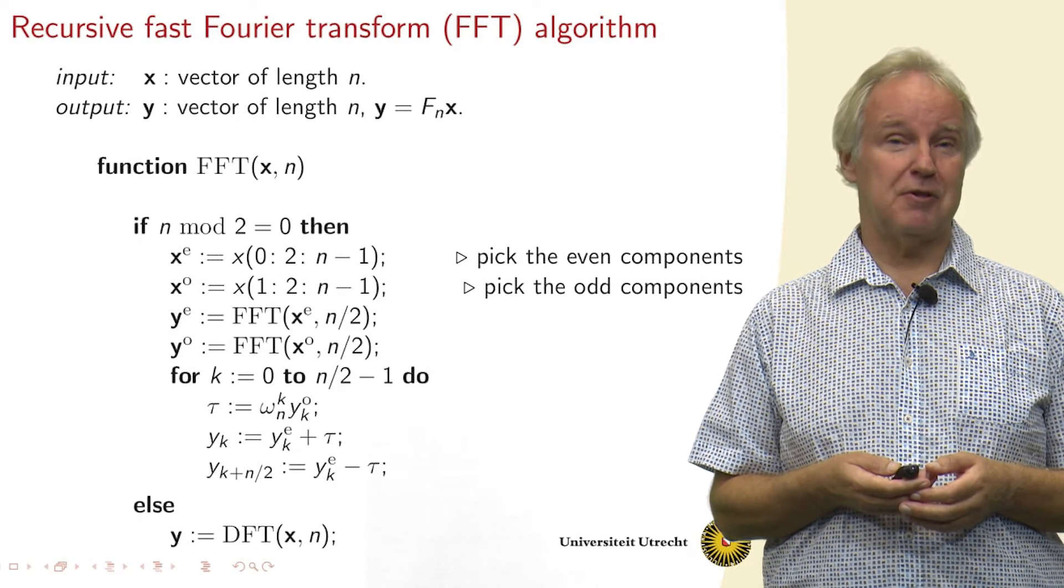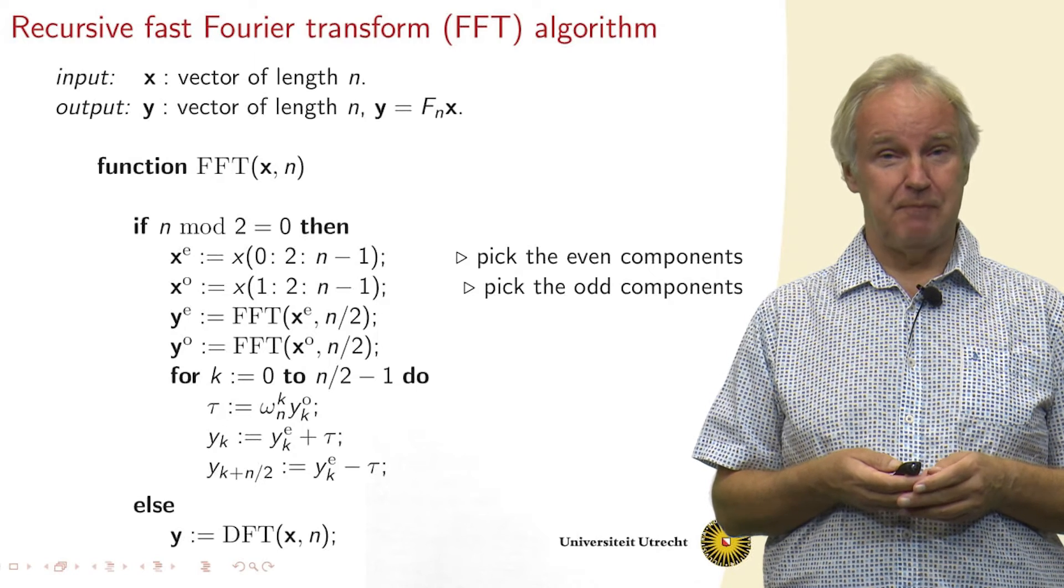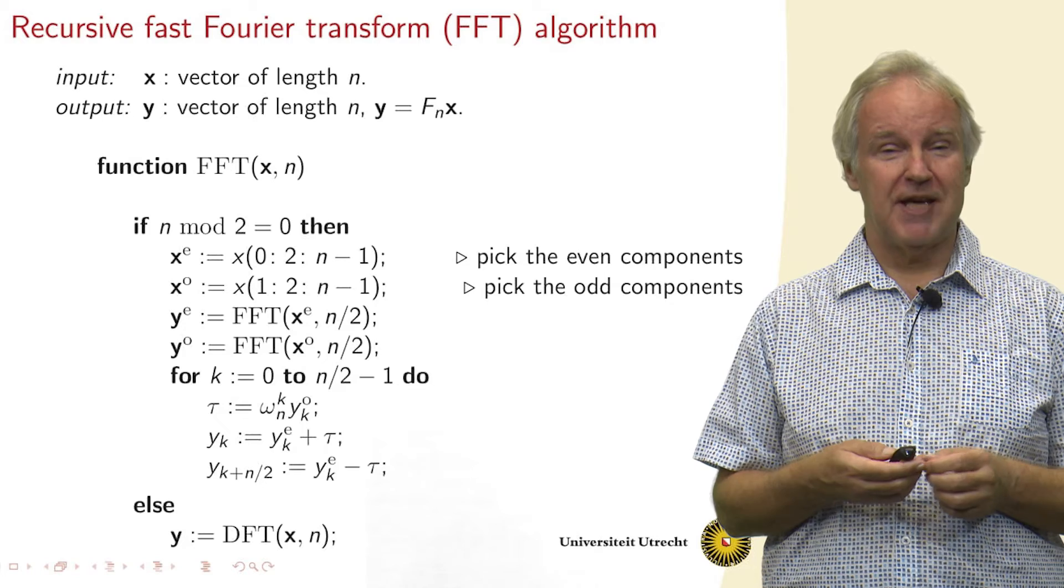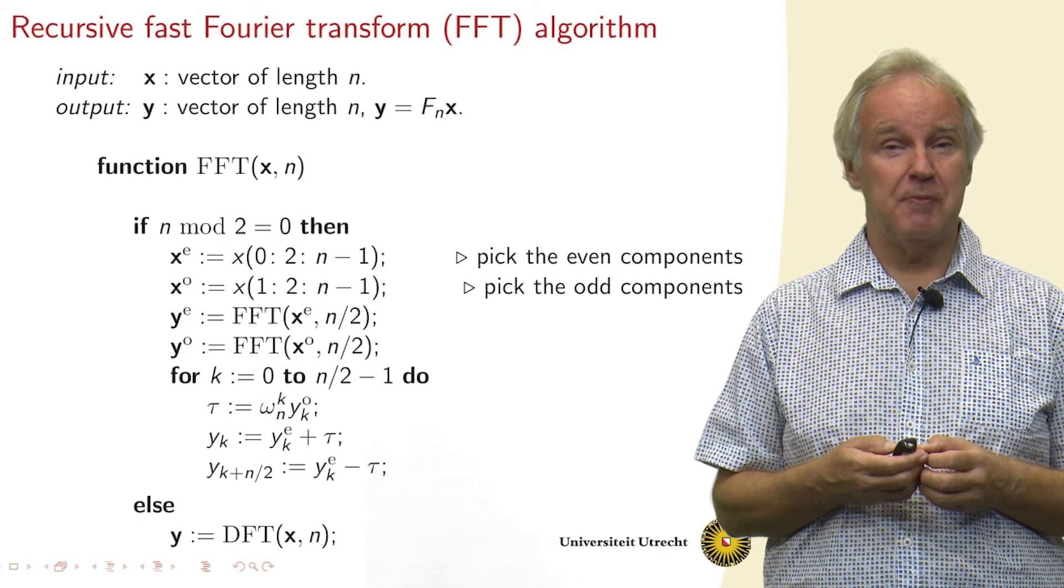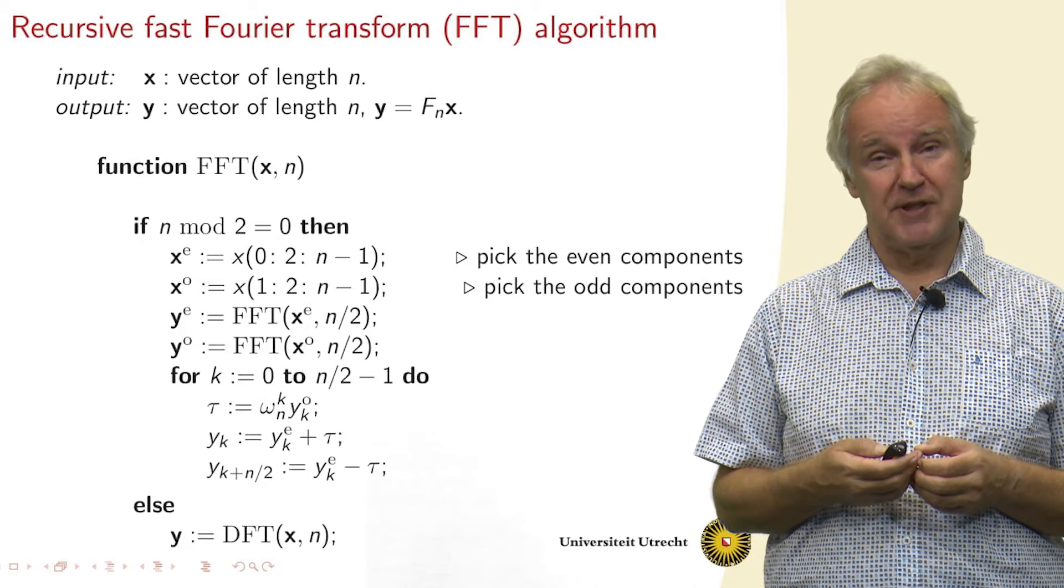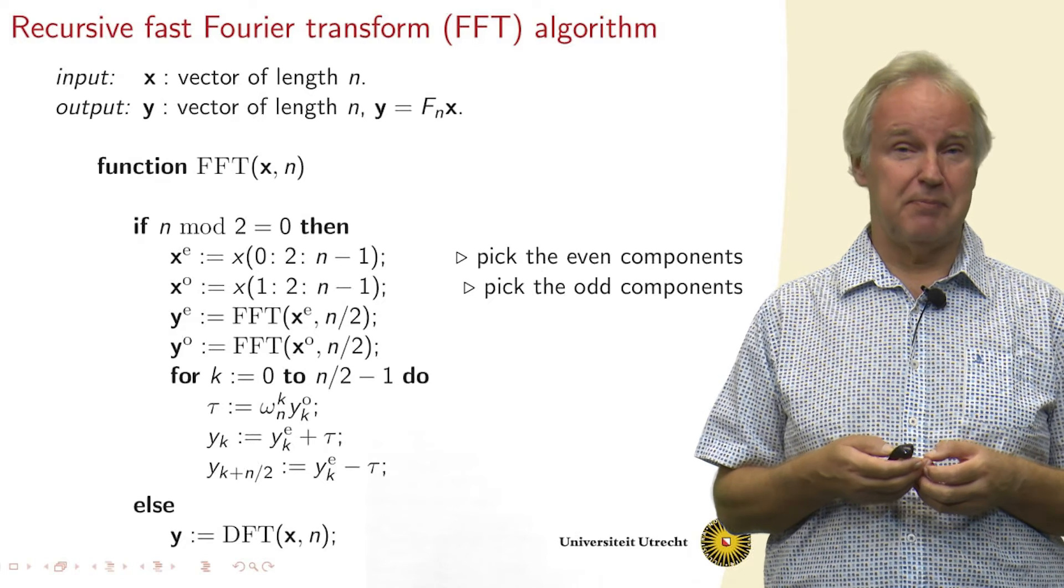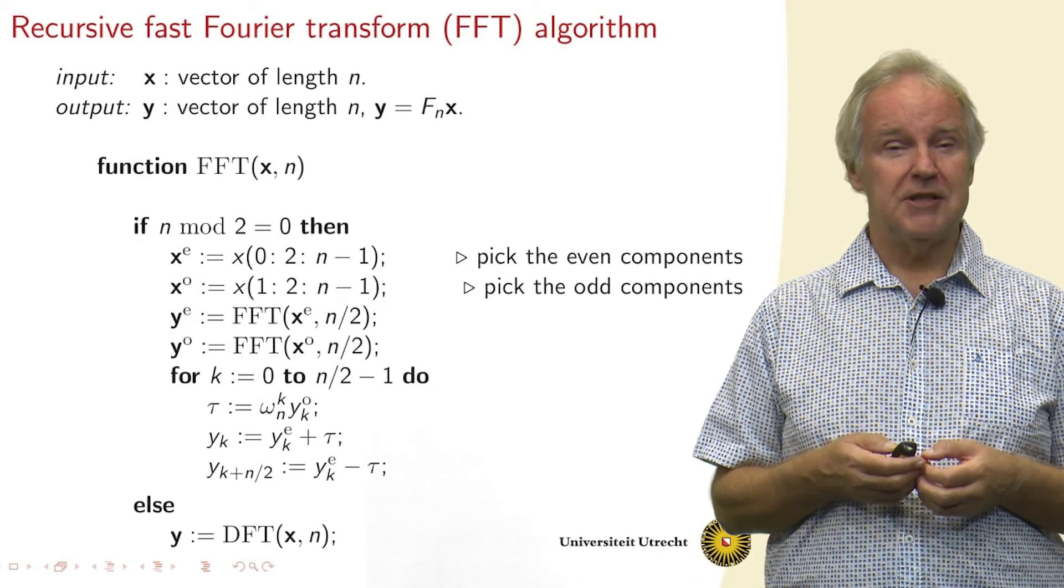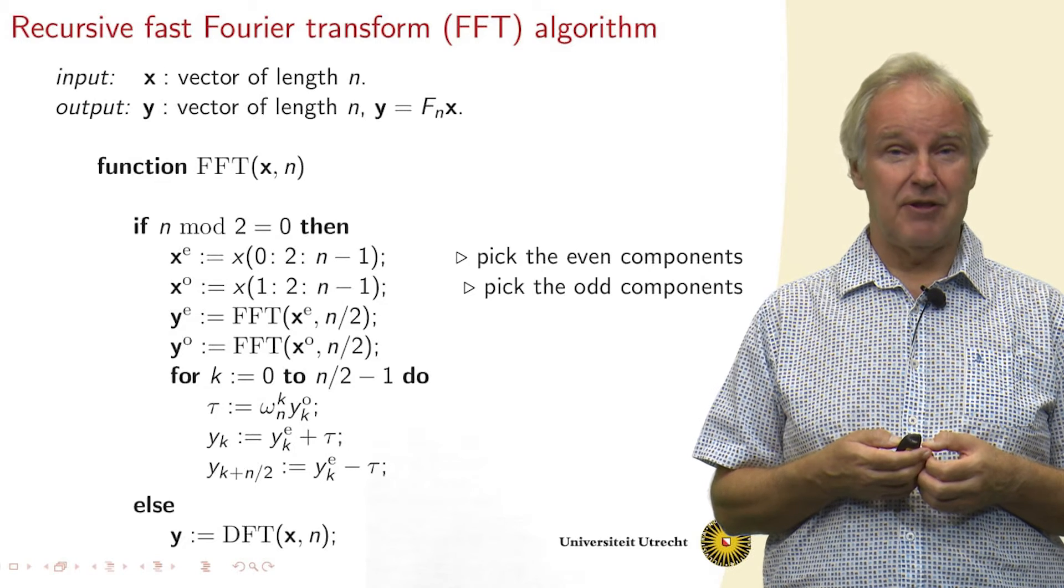We do something similar for the odd components. We have x_e and x_o. The odd part is x_o, and we get that by starting at 1, and then with the same step size of 2, we go on until we get to n-1. So we pick out 1, 3, 5, 7, etc. Now on these two parts, we perform an FFT of length n/2.